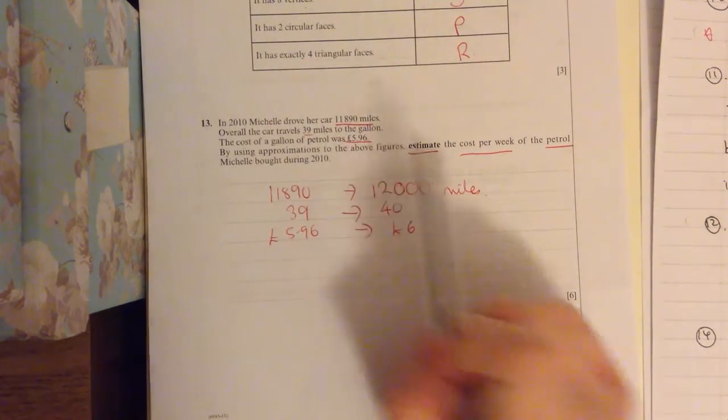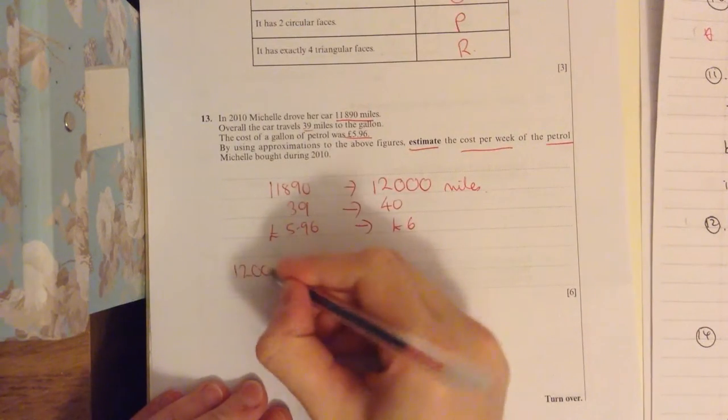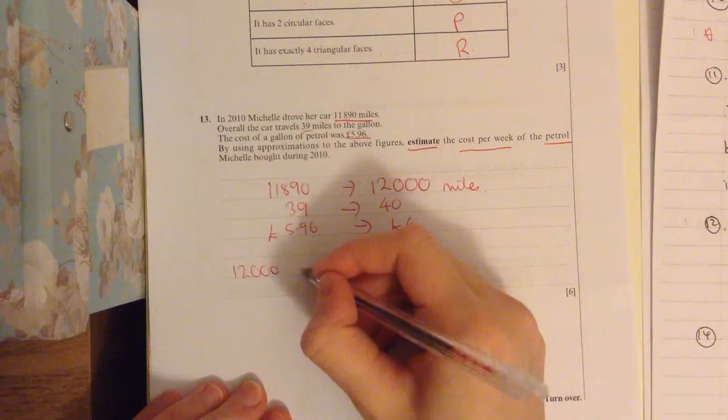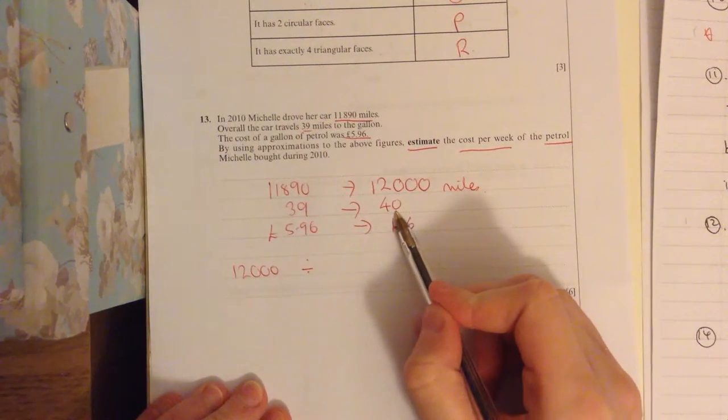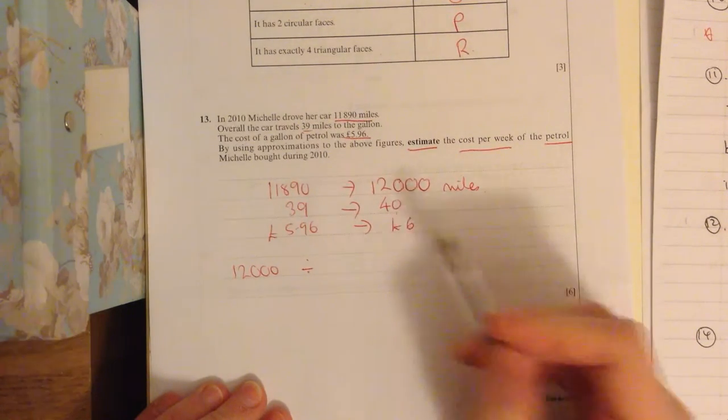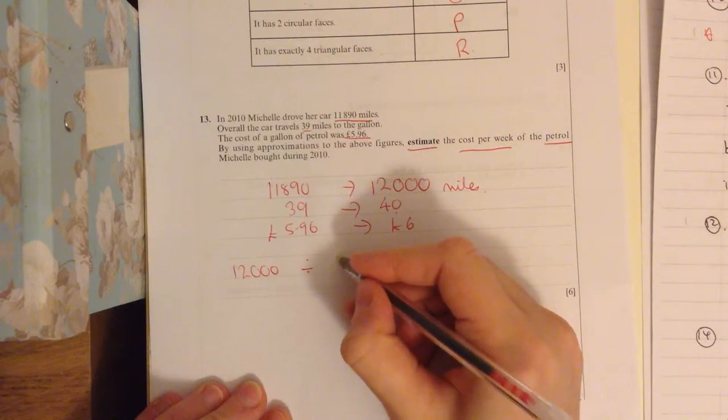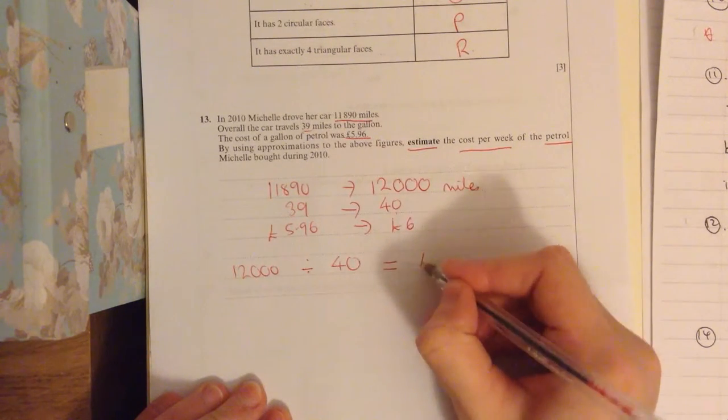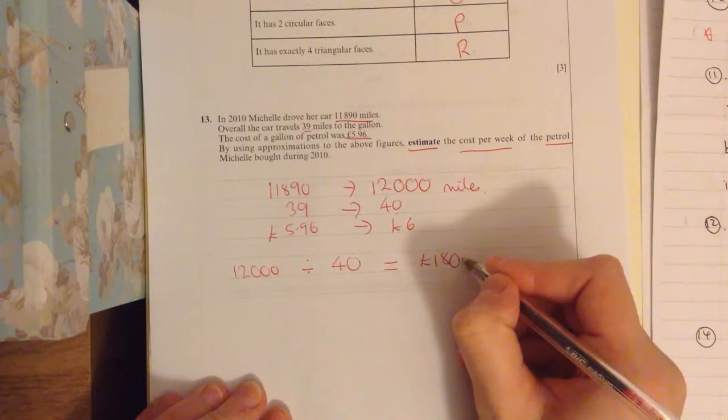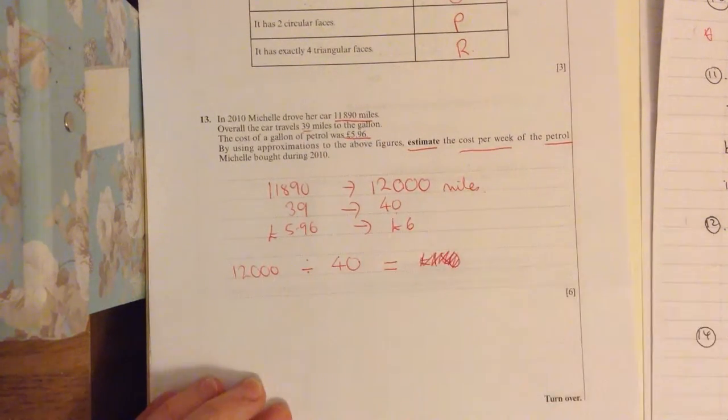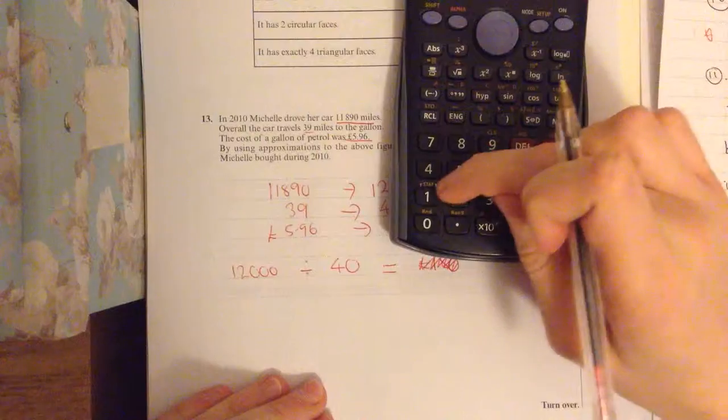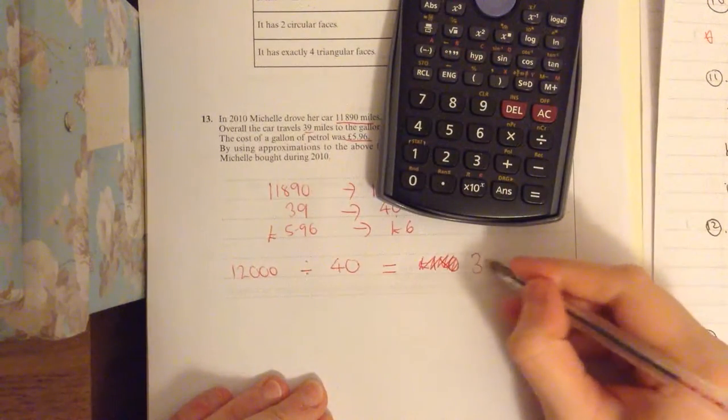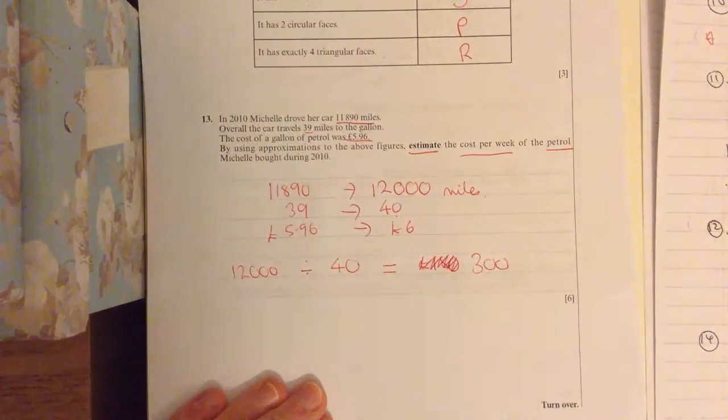Then we know that she drove 12,000 estimated miles. And it travels 40 miles to the gallon. So we want to work out how many gallons she's going to use. So we're going to divide by 40. And that would give us, correct that, sorry. That's going to give us 300.